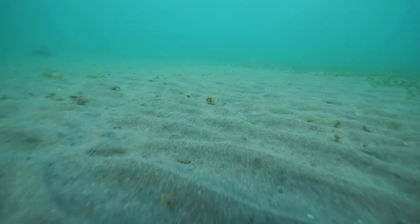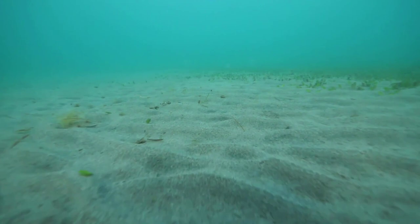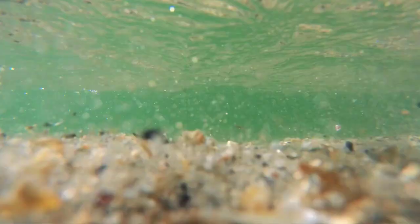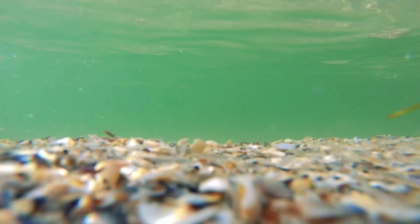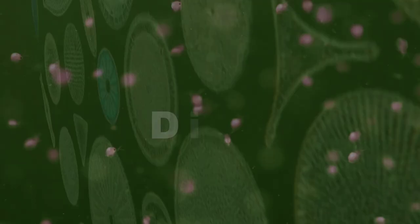The foraminifera, or forams, are marine protists that have chalky skeletons, often in the shape of a snail shell, with openings between the sections. The term foram means little hole. The shells of dead forams form sediments hundreds of meters thick. When brought to the surface by geological uprising, massive white cliffs may form. The diatoms are another group of single-celled protists.